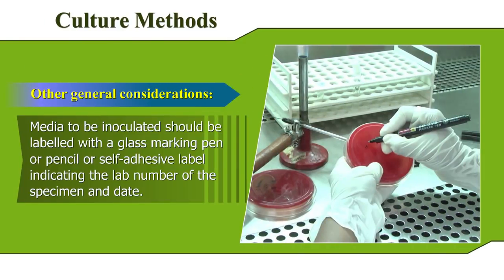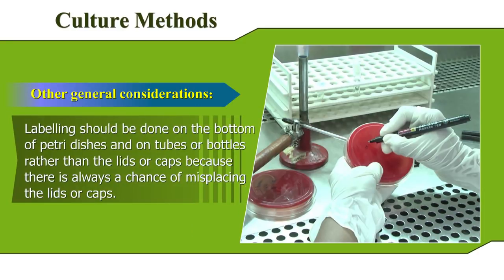Media to be inoculated should be labelled with a glass marking pen, pencil, or self-adhesive label indicating the lab number of the specimen and date. Labelling should be done on the bottom of the petri dishes and on tubes or bottles rather than the lids or caps, because there is always a chance of misplacing the lids or caps.